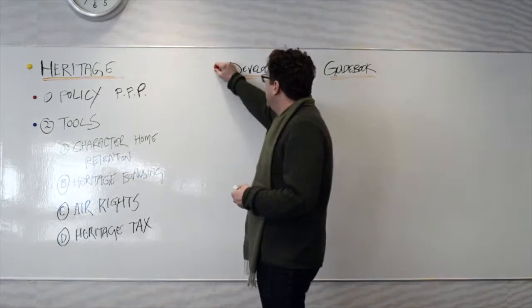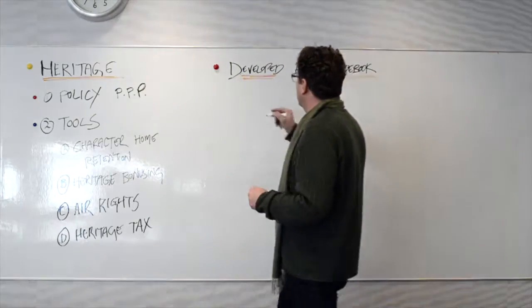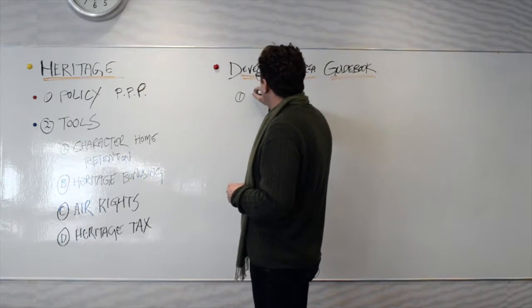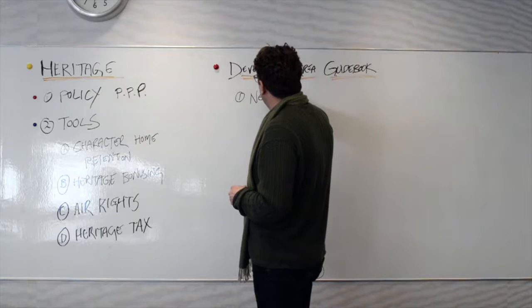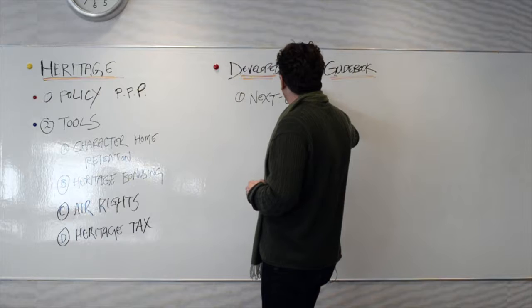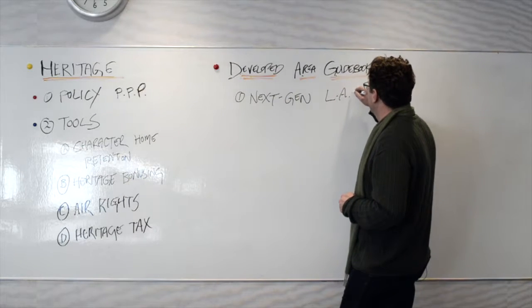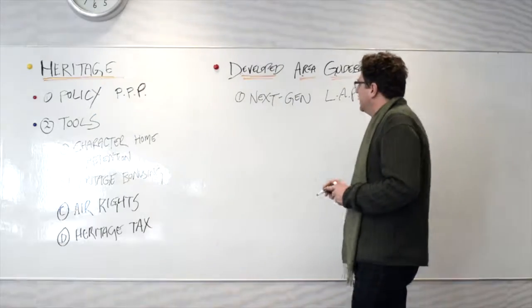So what the Developed Area Guidebook does is really four things. It's the source book, and the first thing it does is it enables a next generation of broadly applied local area plans, also known as LAPs, Local Area Plans.